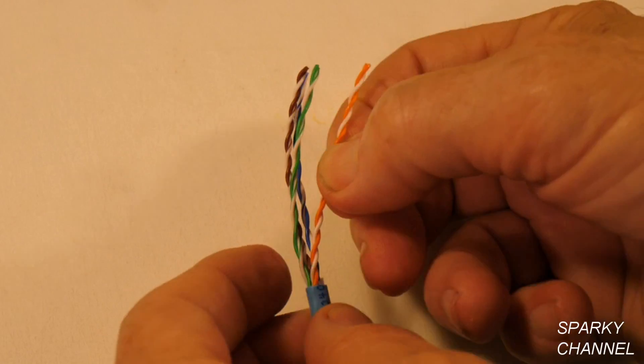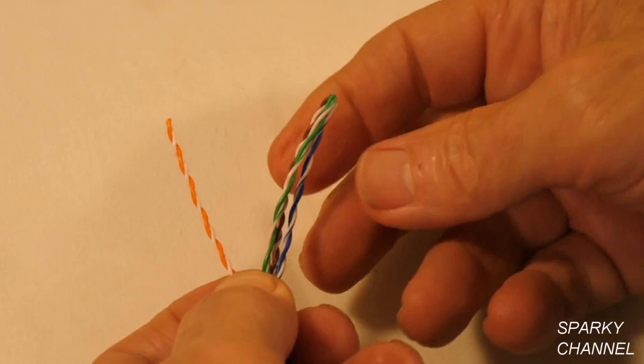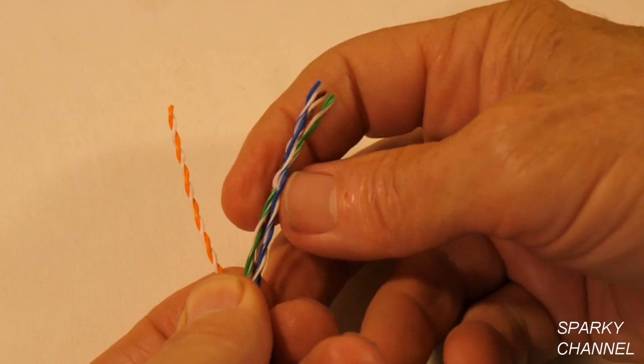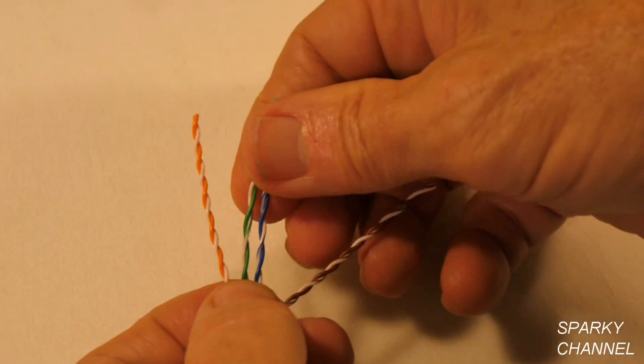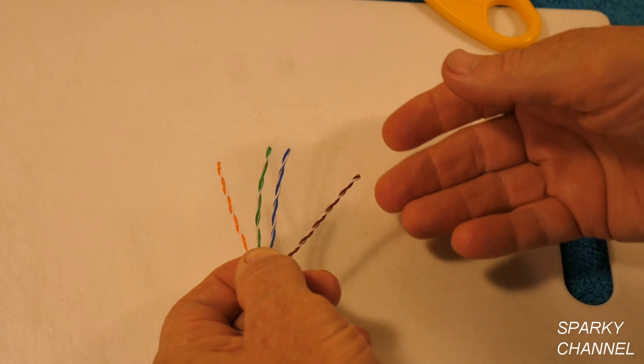We're going to put the white, orange, and orange to the left. And we're going to put the white, brown, and brown to the right. And the reason we're doing that is we're using the T568B wiring alignment. And on that wiring mode, you put the white, orange, and orange on the left, and the white, brown, and brown on the right. So that's the way I start out, just like that.